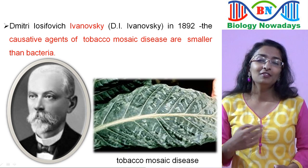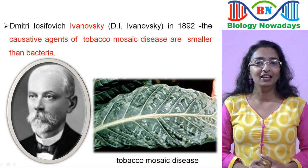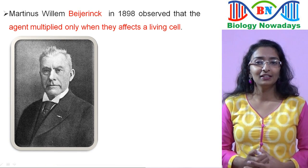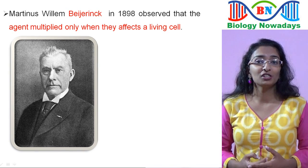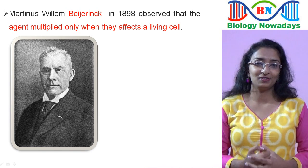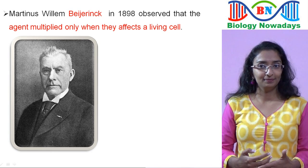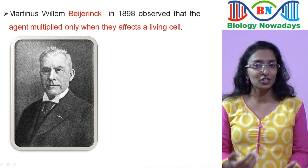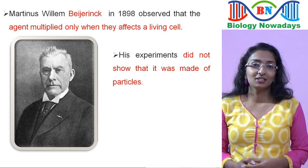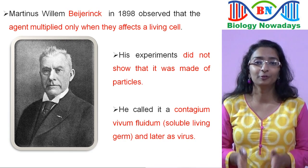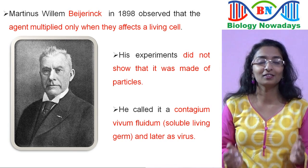Ivanovsky thought the infection might be caused by a toxin produced by bacteria. In 1898, Dutch microbiologist Van Beijerinck repeated the experiments and became convinced that the filtered solution contained a new form of infectious agent. He observed that the agent multiplied only when it affected a living cell, but his experiments did not show it was made of particles visible through a light microscope. So he called it Contagium Vivum Fluidum, meaning soluble living germ, and later called it virus.